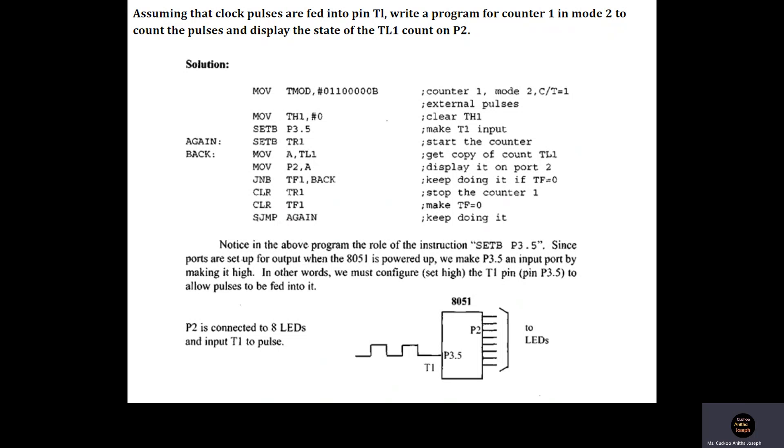Now it is required in the program that we display the count on P2. For that we have to copy the contents of the TL register. TL register holds the count; it is the register that counts up. TH is used to hold the initial count. TL is the one that counts and it contains the current value of the count that has to be sent to port 2.